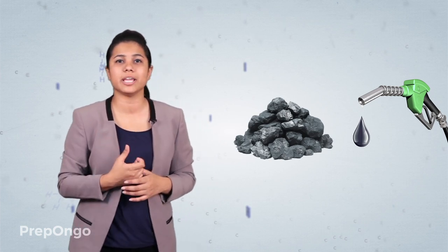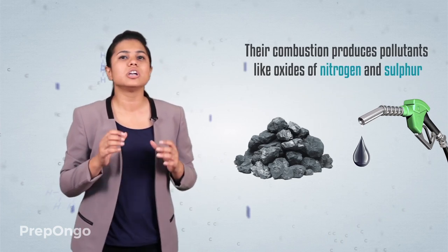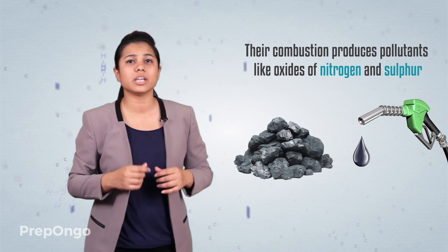Fuels such as coal and petroleum have some amount of nitrogen and sulfur in them. So their combustion results in the formation of oxides of nitrogen and sulfur which are major pollutants in the environment.